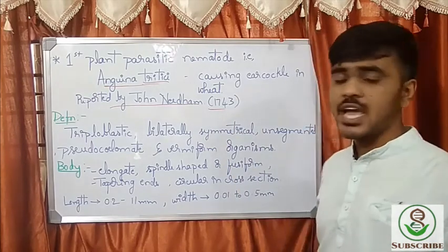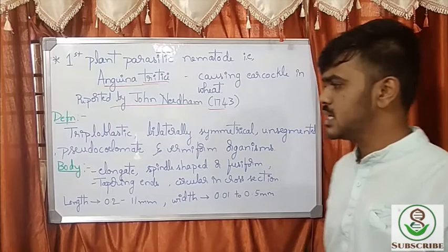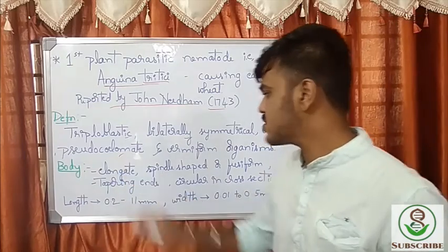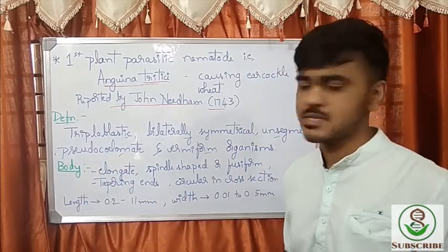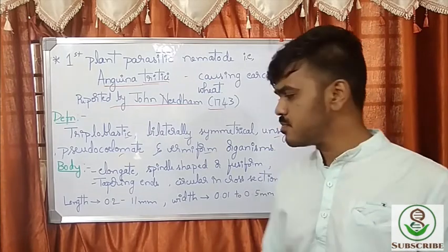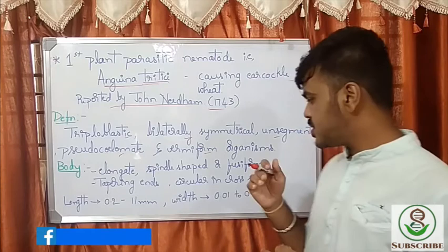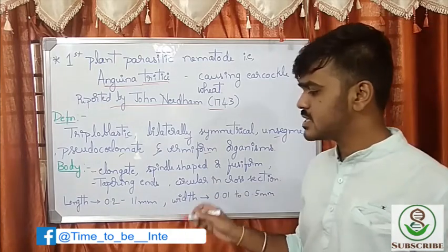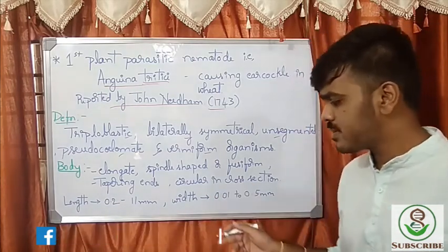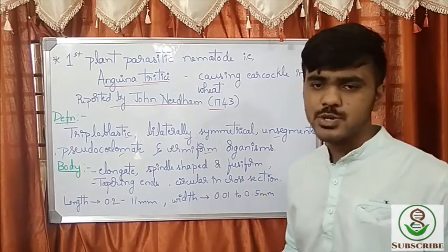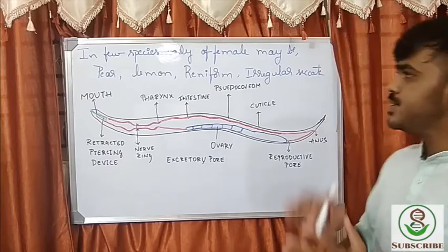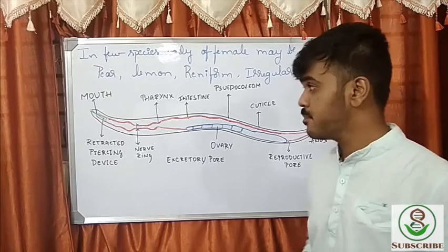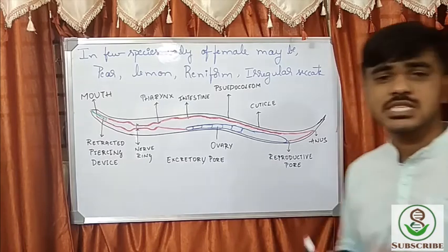The definition of nematodes: nematodes are triploblastic, bilaterally symmetrical, unsegmented, pseudocoelomic, and vermiform organisms. The body is elongated, spindle-shaped or fusiform with tapering ends, circular in cross-section. Length is around 0.2 to 11 mm and width is 0.01 to 0.5 mm. In a few species, the female body may be of different shapes such as pear shape, lemon shape, reniform shape, or irregular circuit shape.